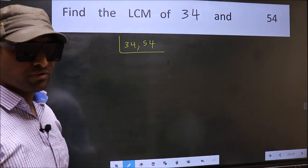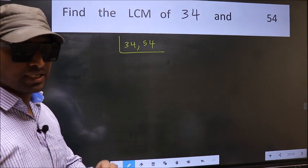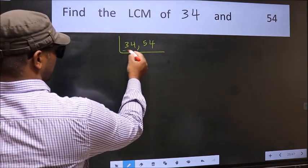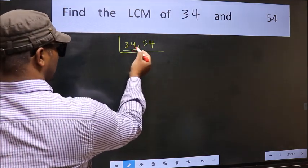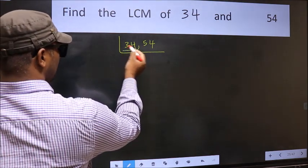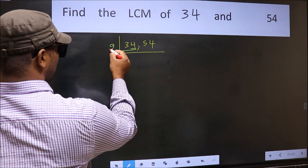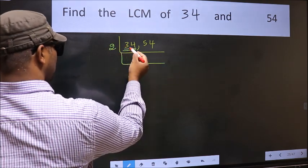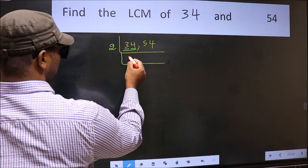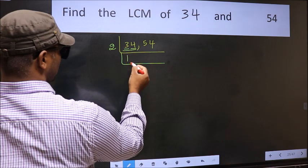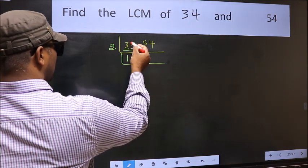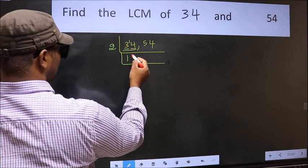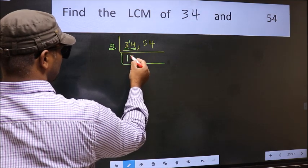Now focus on the first number, which is 34. The last digit 4 is even, so take 2. The first digit is 3; a number close to 3 in the 2 table is 2 — 1×2 is 2. 3 minus 2 is 1, carried forward to make 14. When do we get 14 in the 2 table? 2×7 is 14.